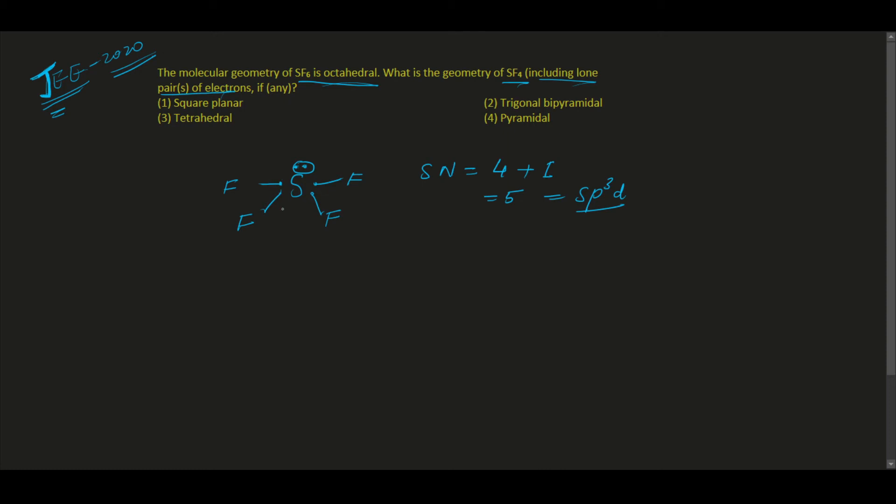Four bonds and one lone pair. So if this type of configuration occurs, how do we place this? Sulfur in the same plane, two fluorine in the same plane, and a lone pair...